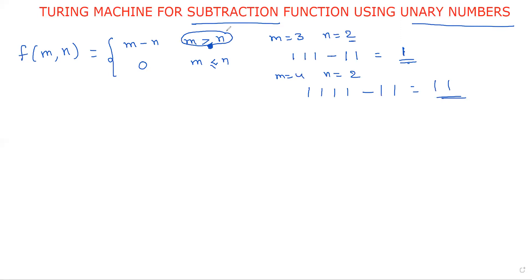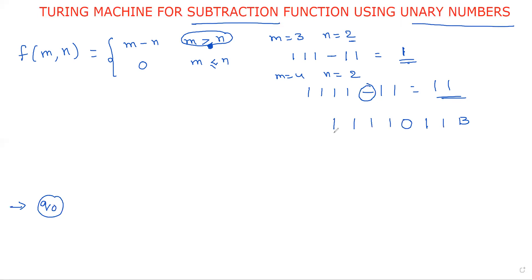What is the procedure and how do we implement it? Initially I am at state q0. Consider my example: four ones — this is m equals 4. The minus symbol is represented by a zero for our convenience, separating the two numbers m and n. So the tape looks like: one one one one, zero, one one. The tape is of infinite length, so any number of blank symbols are possible.